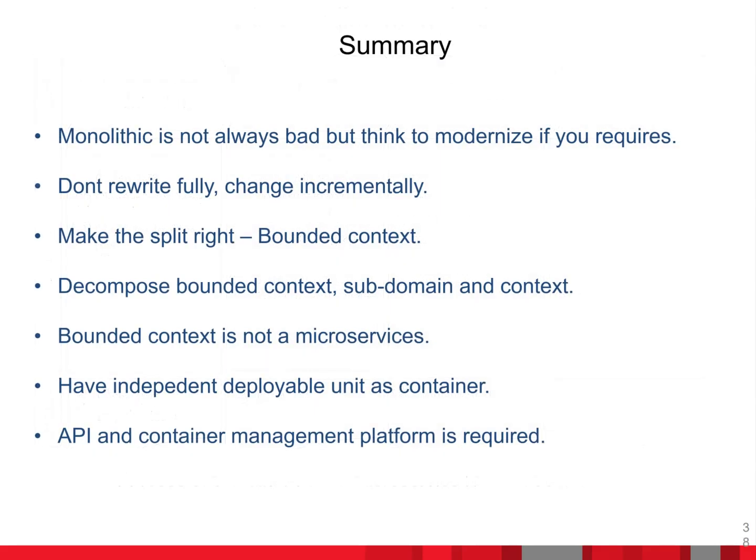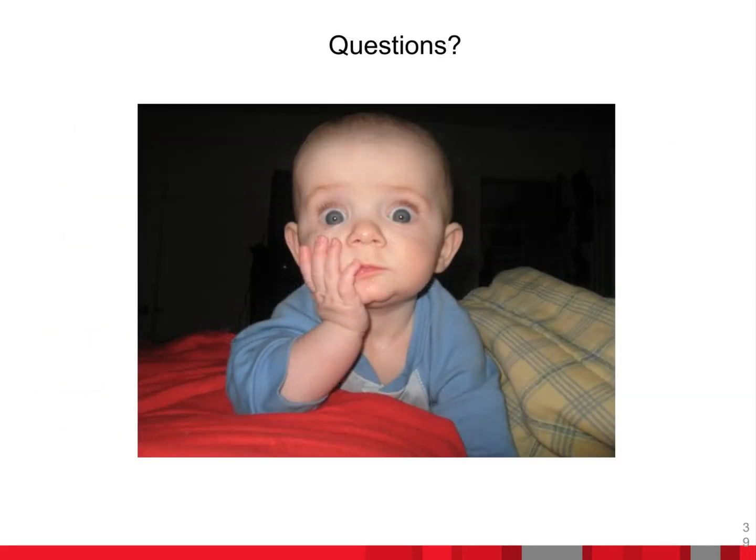Summary: monolithic is not always bad — think about your use case, and if you find the right reason to modernize, this is the time. Never rewrite your whole monolithic application in a big bang — always follow the incremental approach. Make the right boundary context split; decompose into domains, subdomains, and bounded contexts. One boundary context is not necessarily a microservice. Have independent deployable units as containers, API and container management platforms, and an event hub for event-driven architecture. Feel free to give feedback or questions — you can connect with me via Twitter and LinkedIn. Thank you very much.